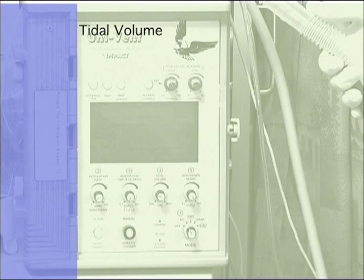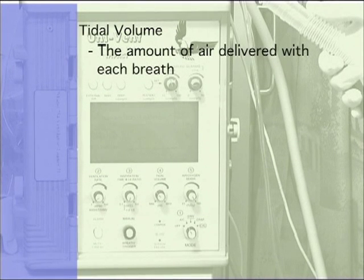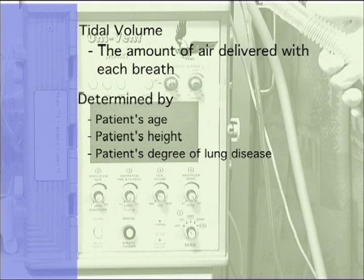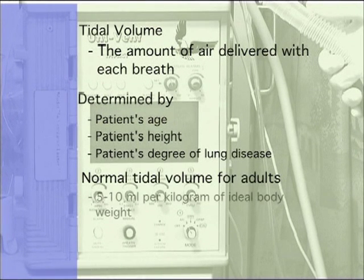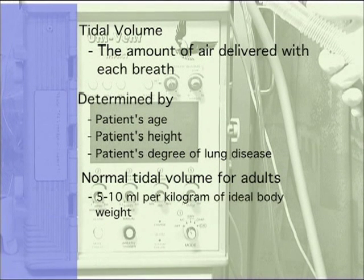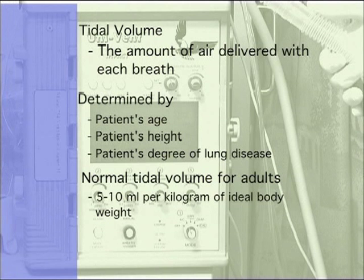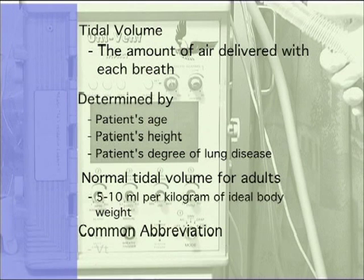Tidal volume. Tidal volume is the amount of air that is delivered with each breath. The care provider determines the tidal volume primarily based on age, height, and degree of lung disease. Normal tidal volumes for healthy adults are about 5 to 10 milliliters per kilogram of ideal body weight. Thus a 65 kilogram or 143 pound person would have a spontaneous tidal volume of 325 milliliters. Careful consideration must be taken to determine mechanical tidal volumes in the face of lung disease to avoid detrimental complications. Tidal volume is sometimes abbreviated with VT.